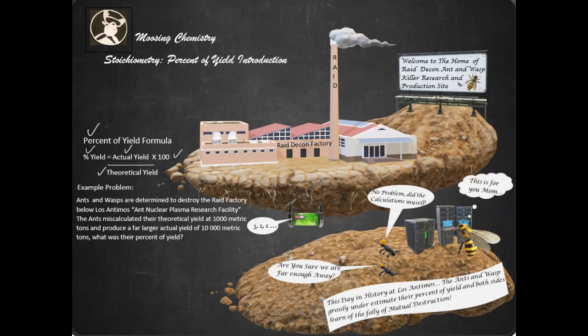Okay, let's look at an example problem here. Ants and wasps are determined to destroy the raid factory below Los Antimos, the Ant Nuclear Plasma Research Facility.